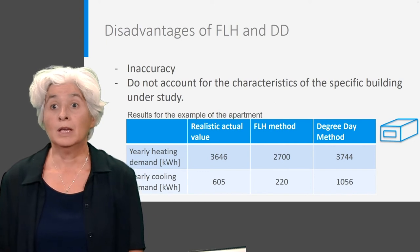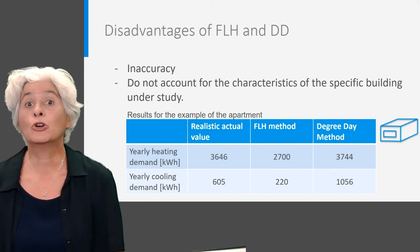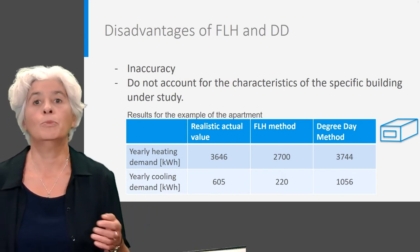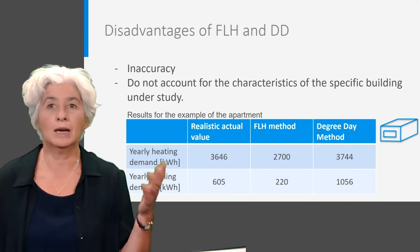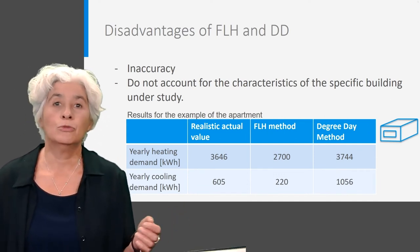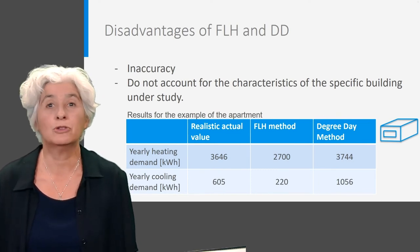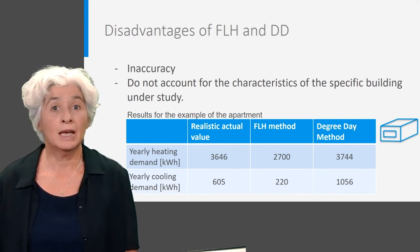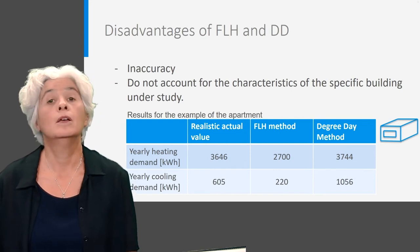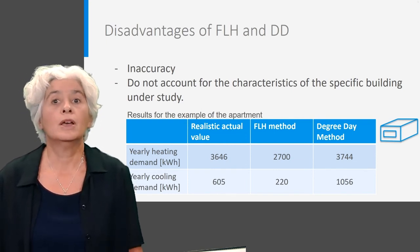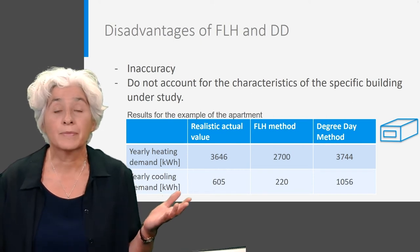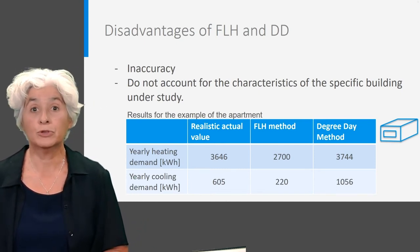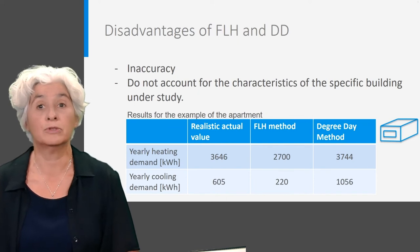The degree day method is widely used and very powerful when it comes to the normalization of energy demands in different years. It offers a good way to make fair comparisons between years and between climates. However, its application to make estimates of the yearly energy use based on nominal powers is not recommended. Although full load hours and degree days may be very useful for a quick estimate of the magnitude of the energy demand, it is evident that they are very inaccurate. The main reason for this is that they are based on averages over different buildings and do not account for the specific characteristics of the building under consideration.